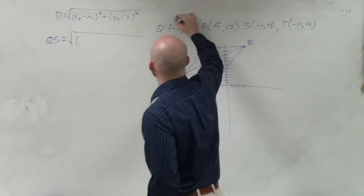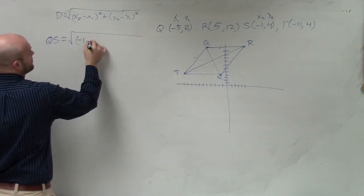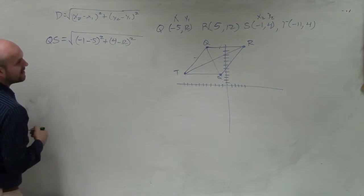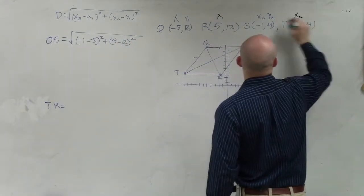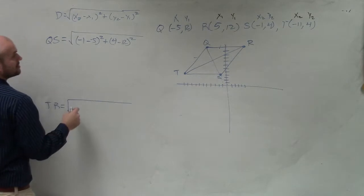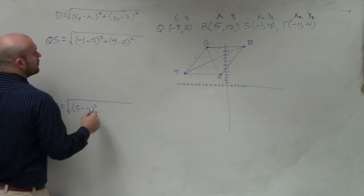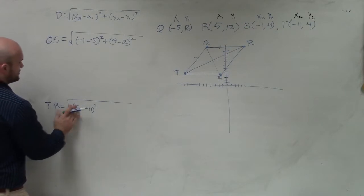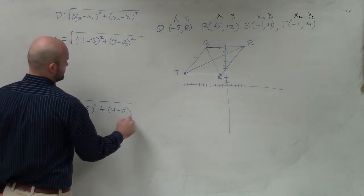And then QS, and then I'll do TR. Doing the distance formula. So in QS, I'll label this as x1, x2, y1, y2. So what I have is negative 1 minus negative 5 squared plus 4 minus 12 squared. And then QS, and then I'll do TR. And then for TR, I'll label this x1, x2, y1, y2.